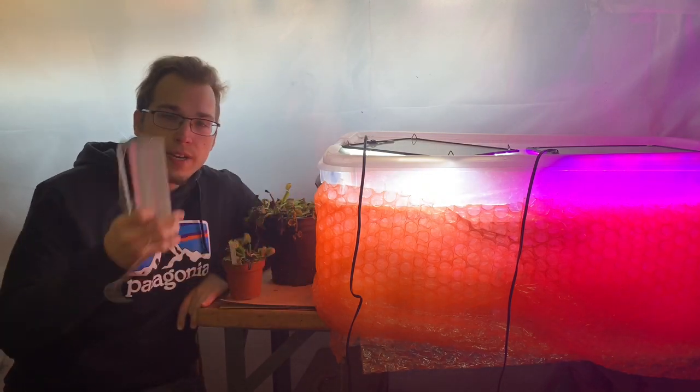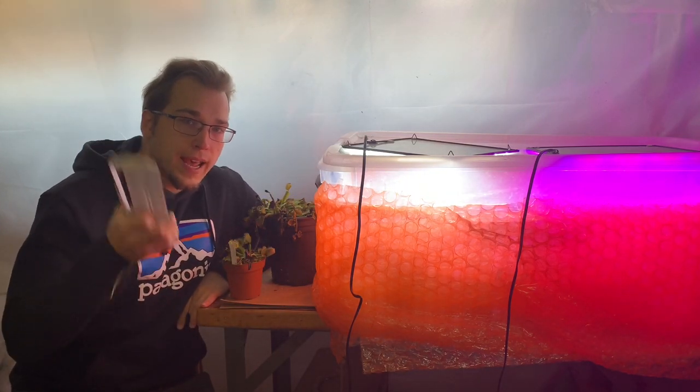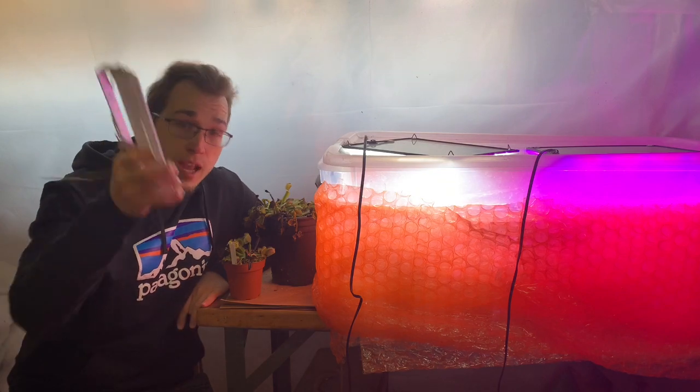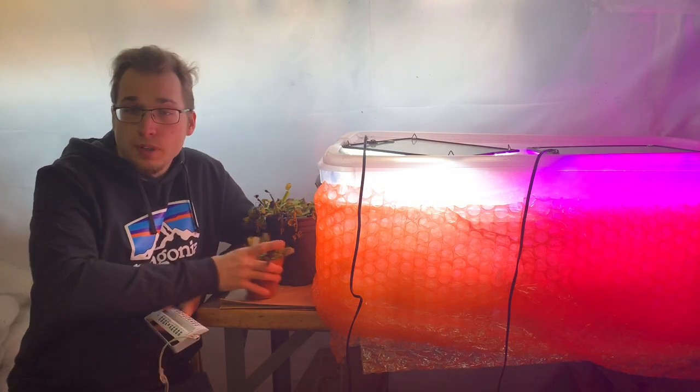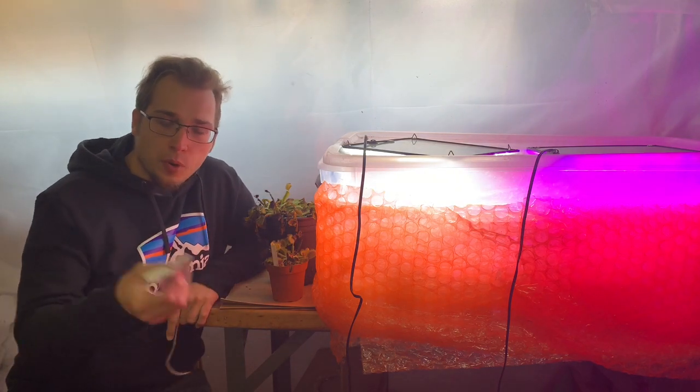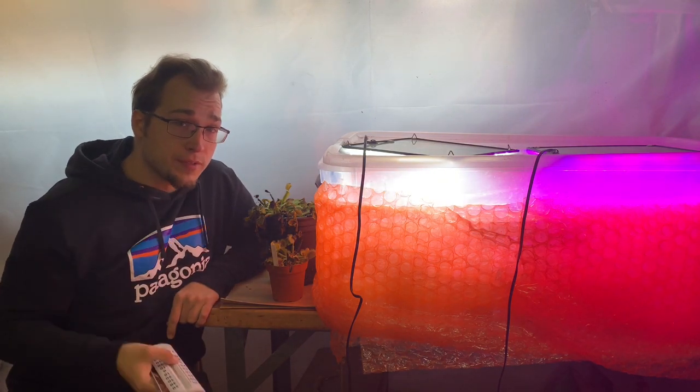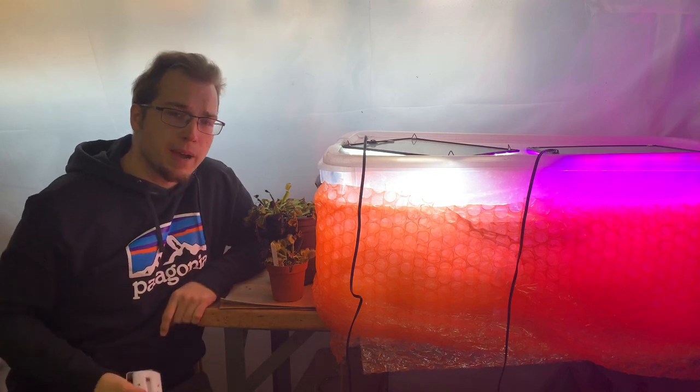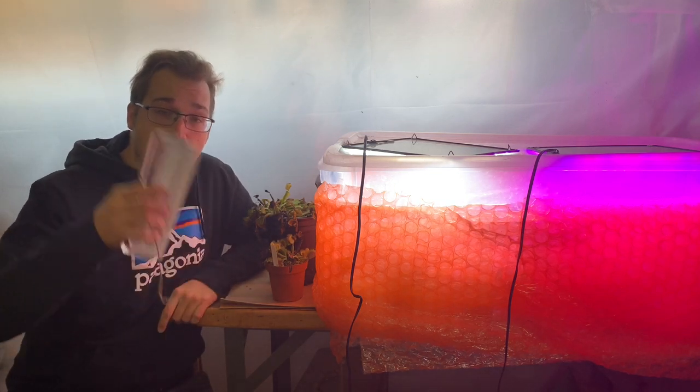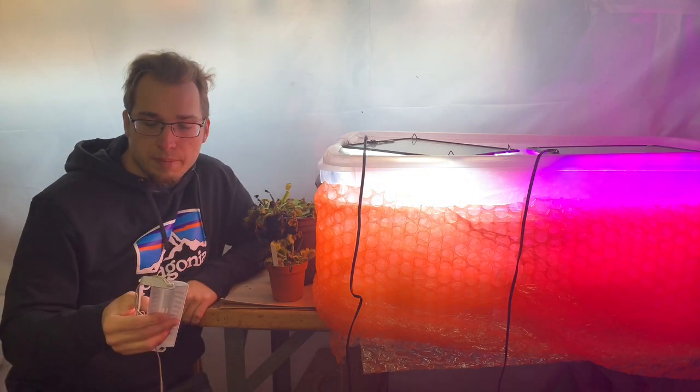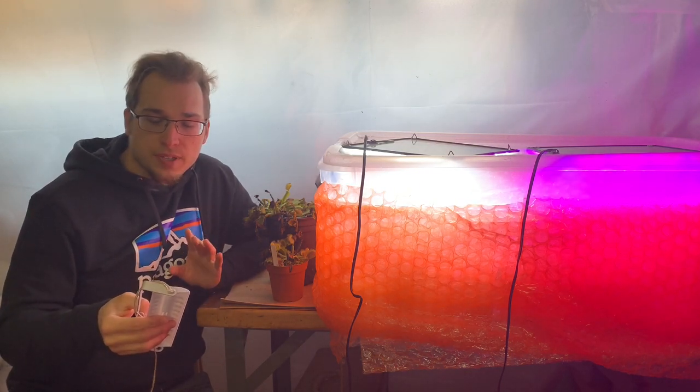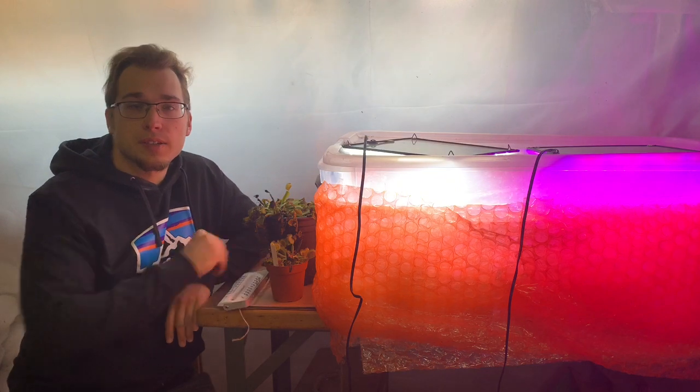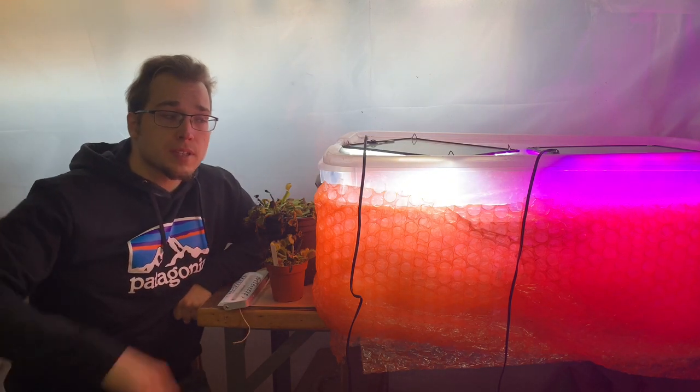Pretty much, Venus flytraps do not need any light during dormancy if you keep them at the correct temperature. So, that temperature range is in between 45 degrees Fahrenheit down to 25 degrees Fahrenheit. That's what I like to keep mine in during dormancy, and for everyone outside of the U.S., that's going to be about 5 degrees Celsius down to negative 5 degrees Celsius. That's a safe temperature range for dormancy.